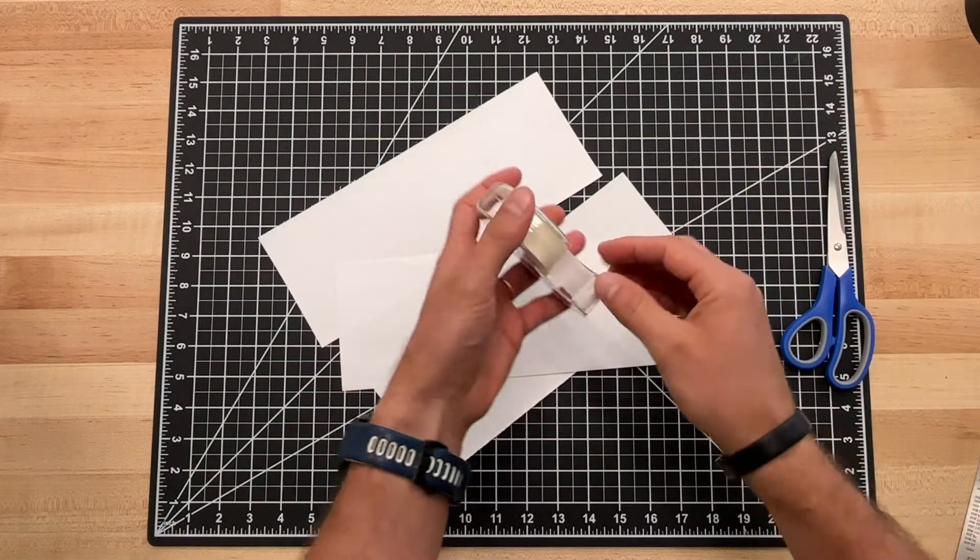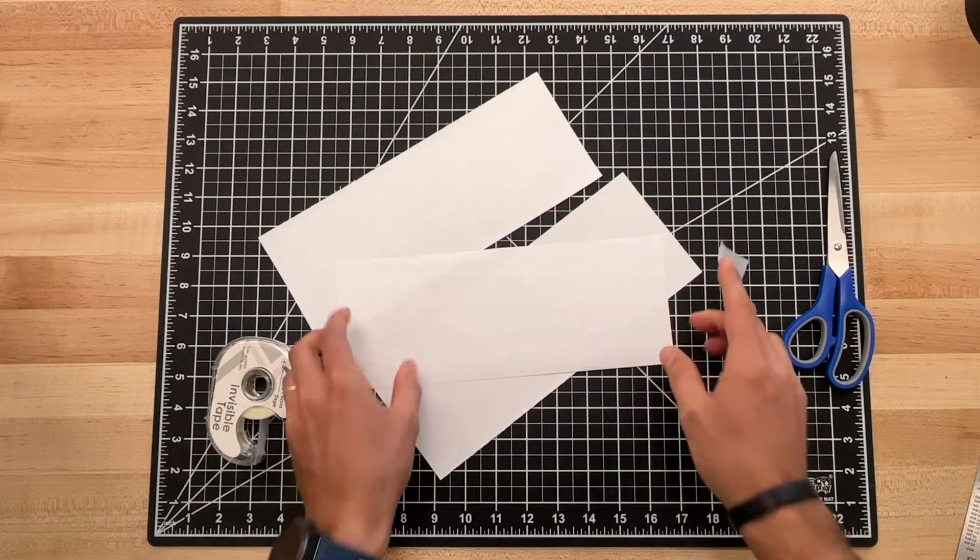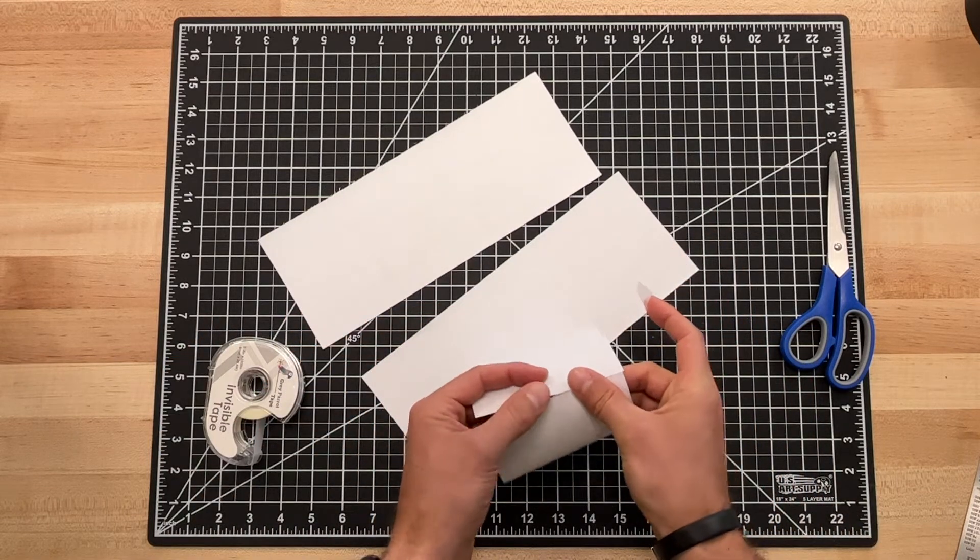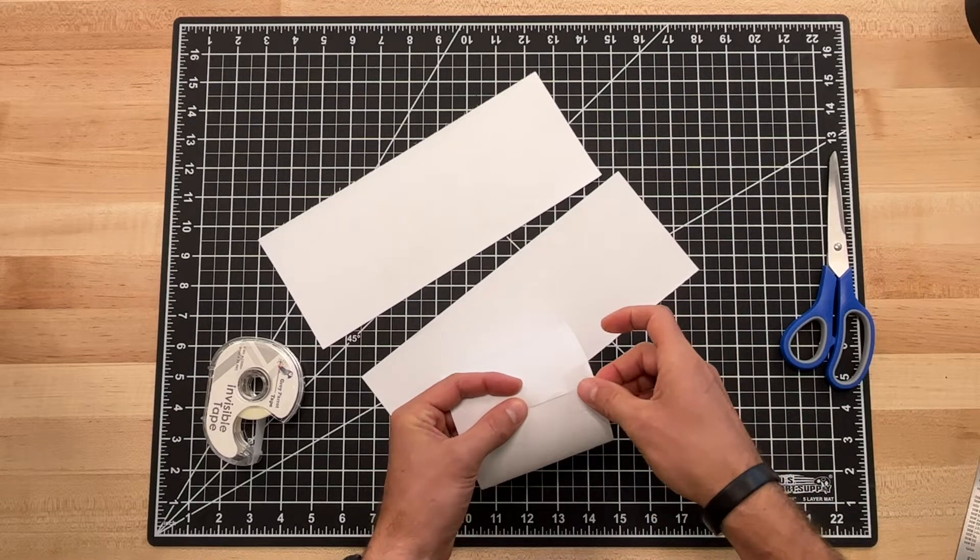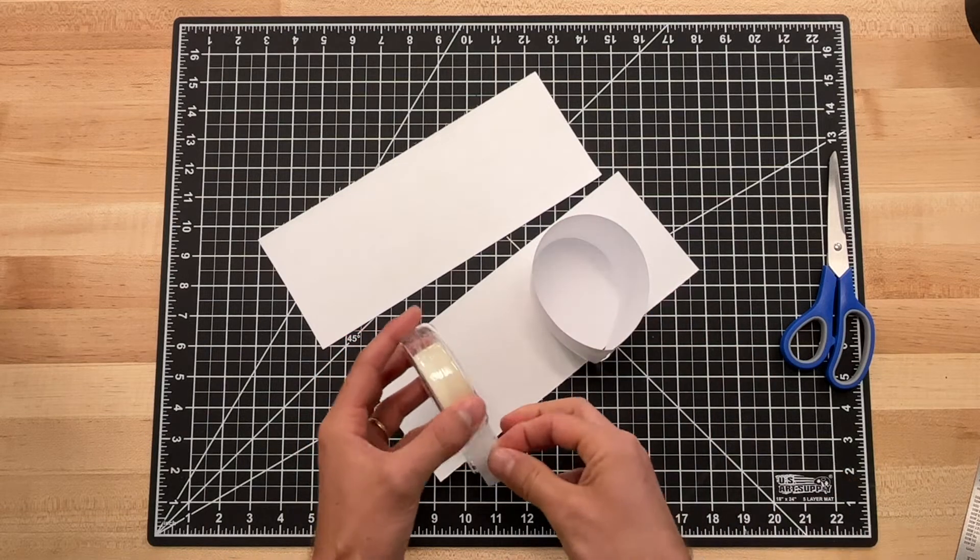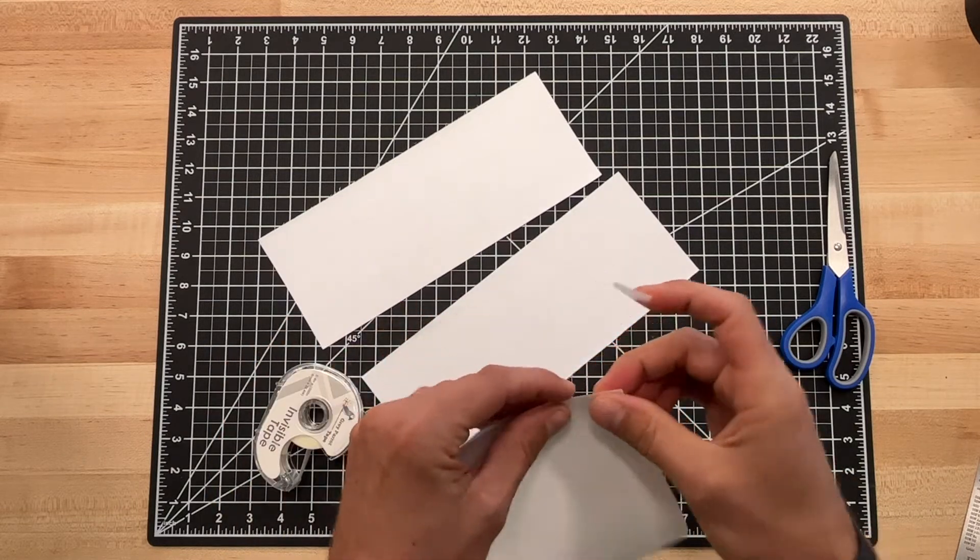We're going to take a little piece of tape, don't need a lot, just a small piece. We're going to simply attach the two ends of the paper, one on there and one on the bottom.